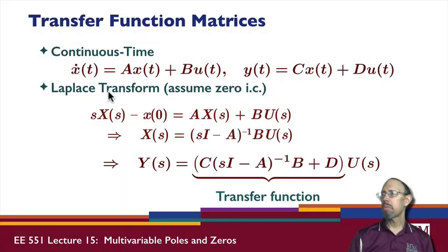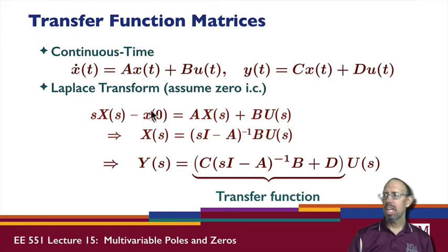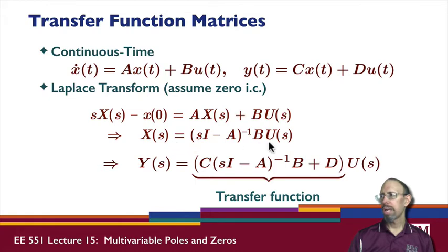In continuous time, we basically have the same thing. We have this differential equation and an output equation. We take the Laplace transform of the differential equation, and again assuming zero initial conditions, this term goes away. Taking A over to the other side and factoring out X, I get an expression for X of S. Plugging that into the Laplace transform of the output equation, I get the transfer function in continuous time.